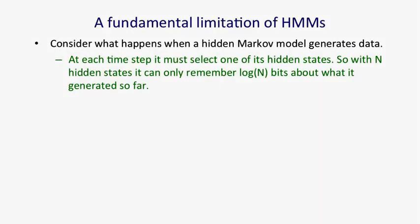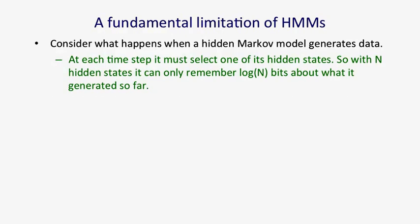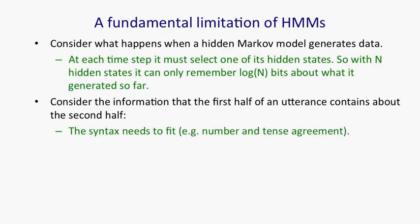There's a fundamental limitation of HMMs. It's easiest to understand this limitation if we consider what happens when a hidden Markov model generates data. At each time step when it's generating, it selects one of its hidden states. So if it's got N hidden states, the total information stored in the hidden state is at most log N bits. So now let's consider how much information a hidden Markov model can convey to the second half of an utterance it produces from the first half. So imagine it's already produced the first half of an utterance, and now it's going to have to produce the second half. And remember, its memory of what it said for the first half is in which of the N states it's in. So its memory only has log N bits of information in it.